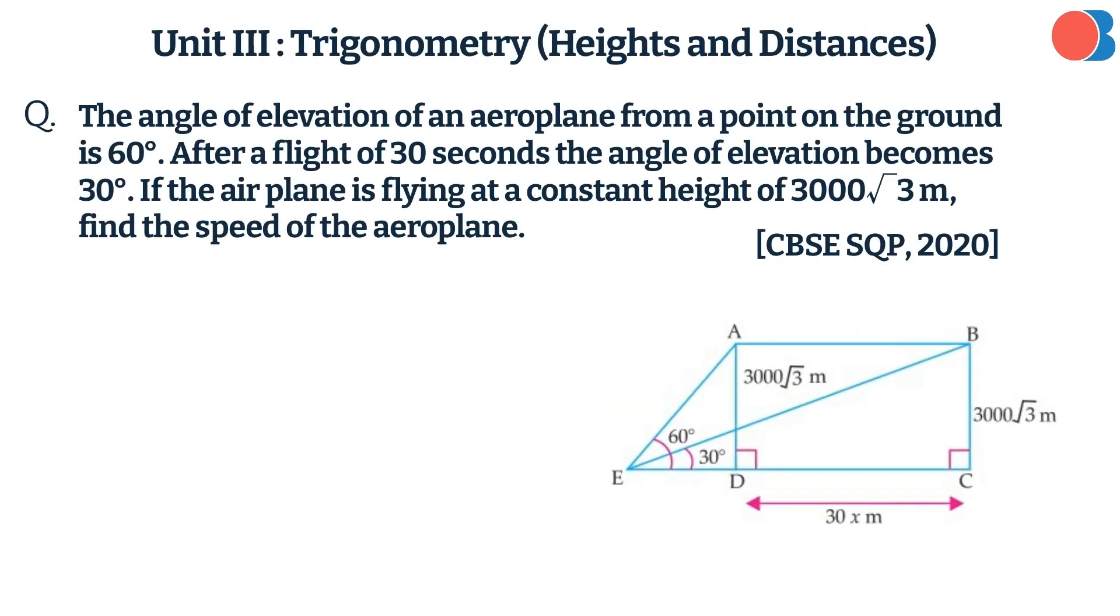The angle of elevation of an aeroplane from a point on the ground is 60 degrees. After a flight of 30 seconds, the angle of elevation becomes 30 degrees. If the airplane is flying at a constant height of 3000√3 meters, find the speed of the aeroplane. Here is the answer.